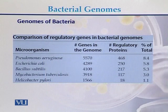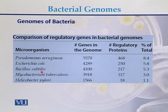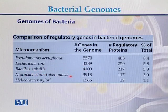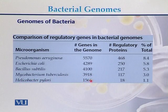Here we can see the comparison of the number of genes on different genomes of microorganisms. In the case of Pseudomonas we can see the number of genes, then in the case of E. coli the number of genes is approximately 4289, Bacillus subtilis 4100, Mycobacterium tuberculosis 3918, and Helicobacter with 1566 genes present on the genome.